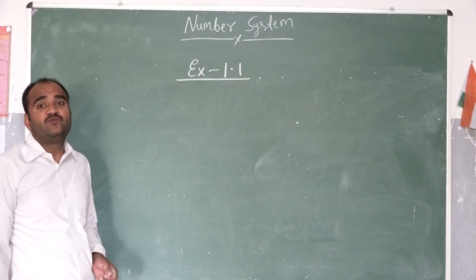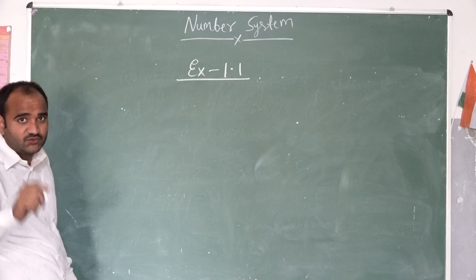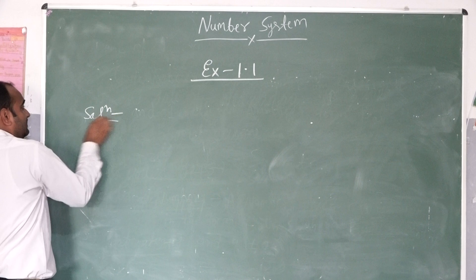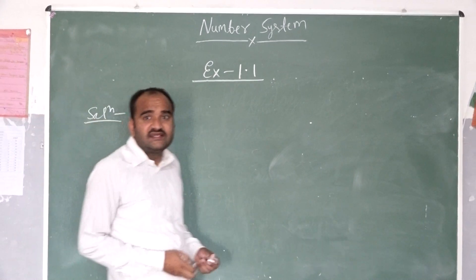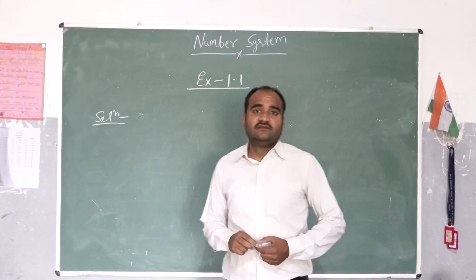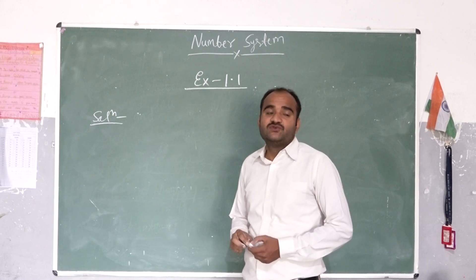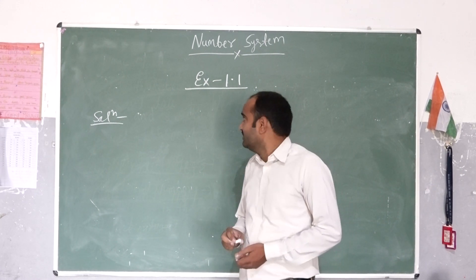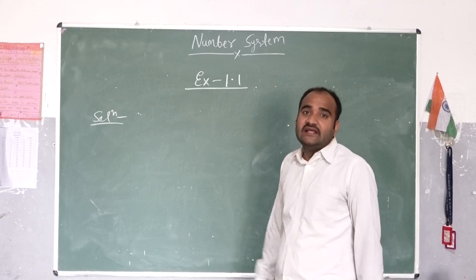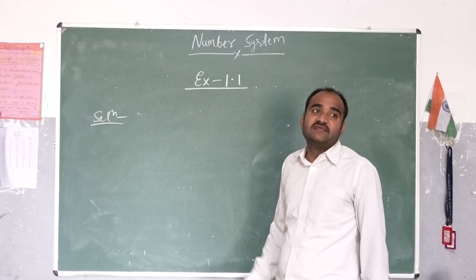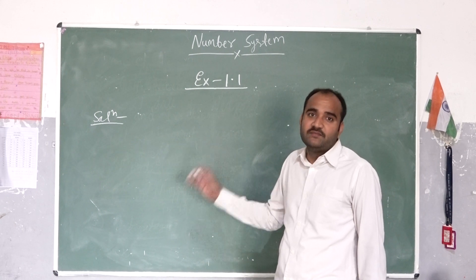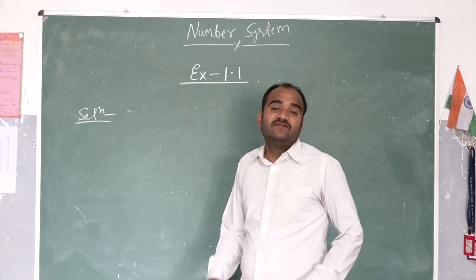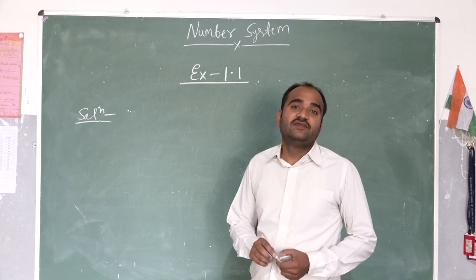In exercise 1.1, your first question is: is zero a rational number or not? The solution: yes, zero is a rational number because it can be written in the form of P by Q.